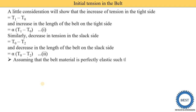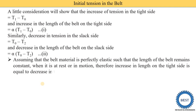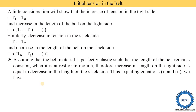We assume that the belt material is perfectly elastic, such that the total length of the belt remains constant whether it is at rest or in motion. Therefore, when the belt drive is not running, there is no net change in belt length. This means the increase in length on the tight side equals the increase in length on the slack side. So if the tight side length increases by 5 mm, the slack side length also increases by 5 mm. Therefore, Equation 1 equals Equation 2.